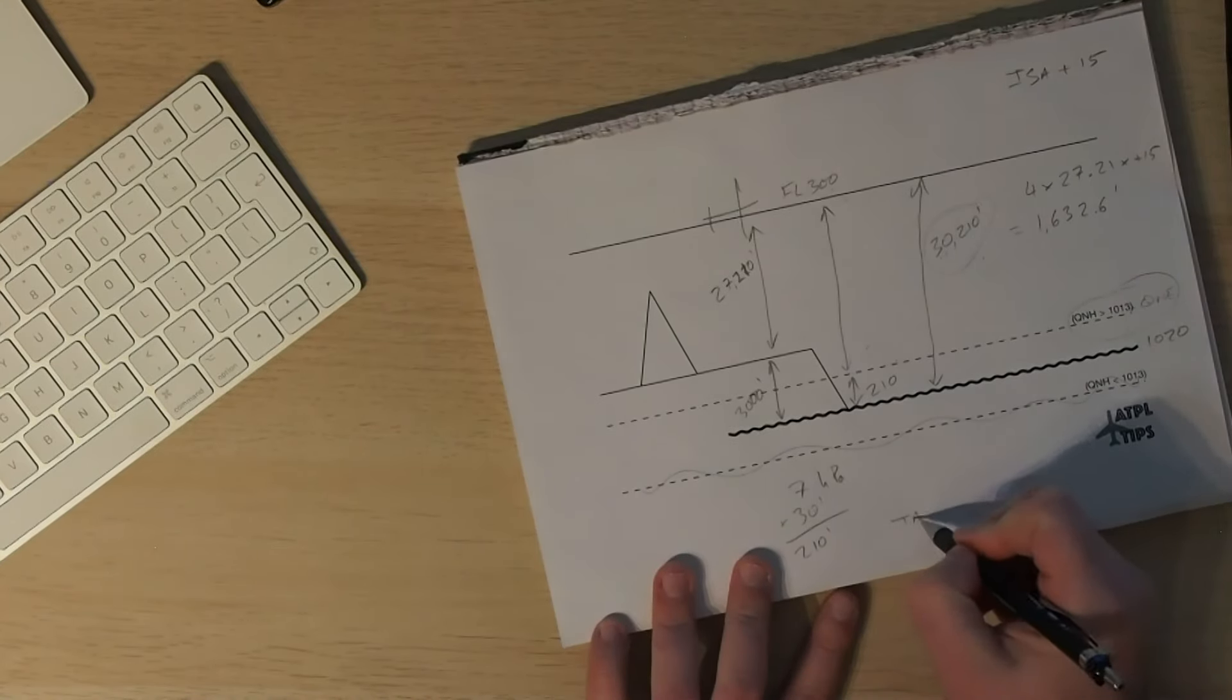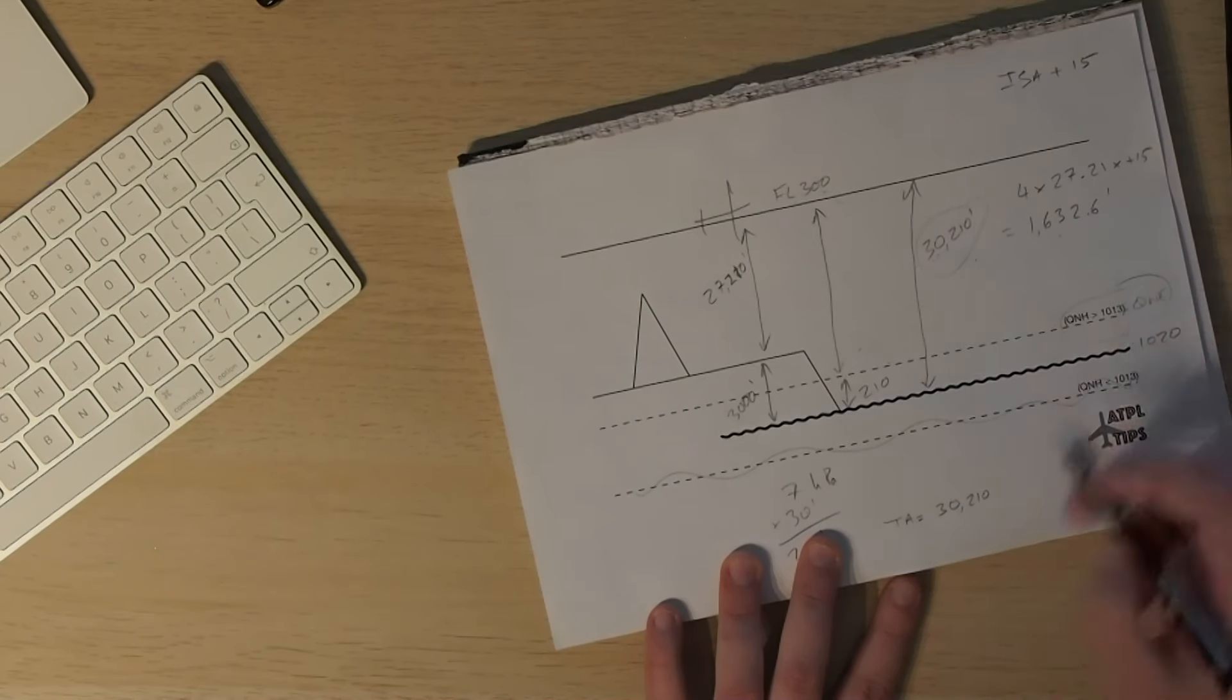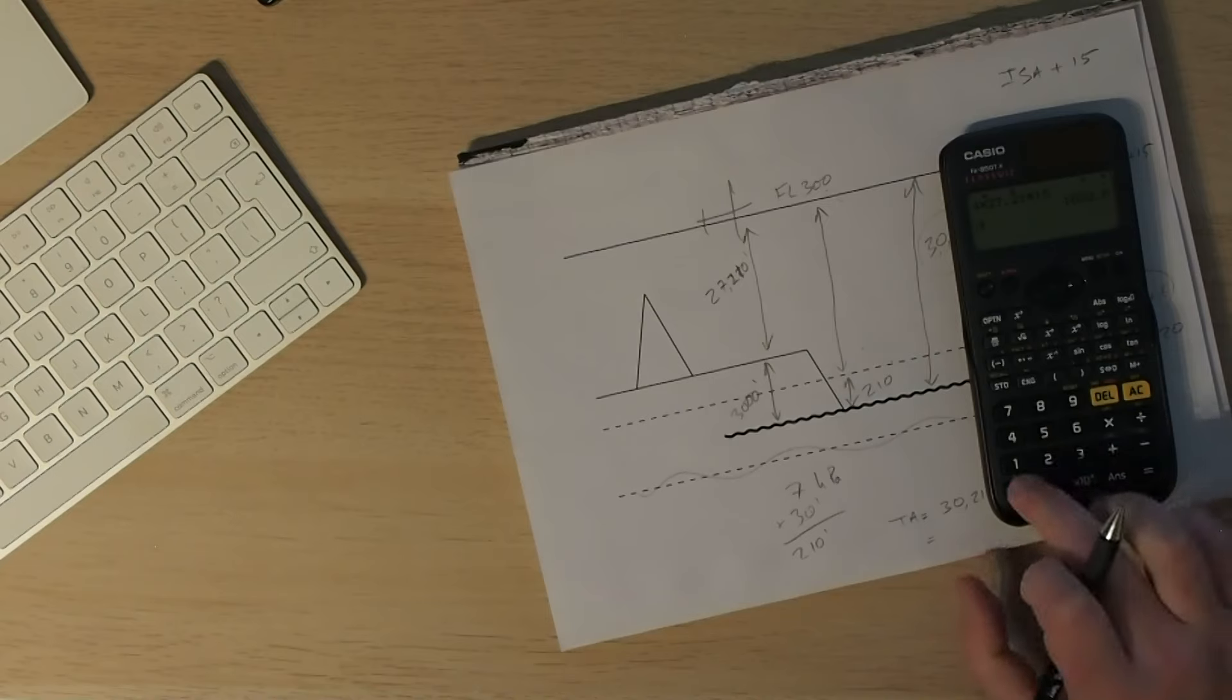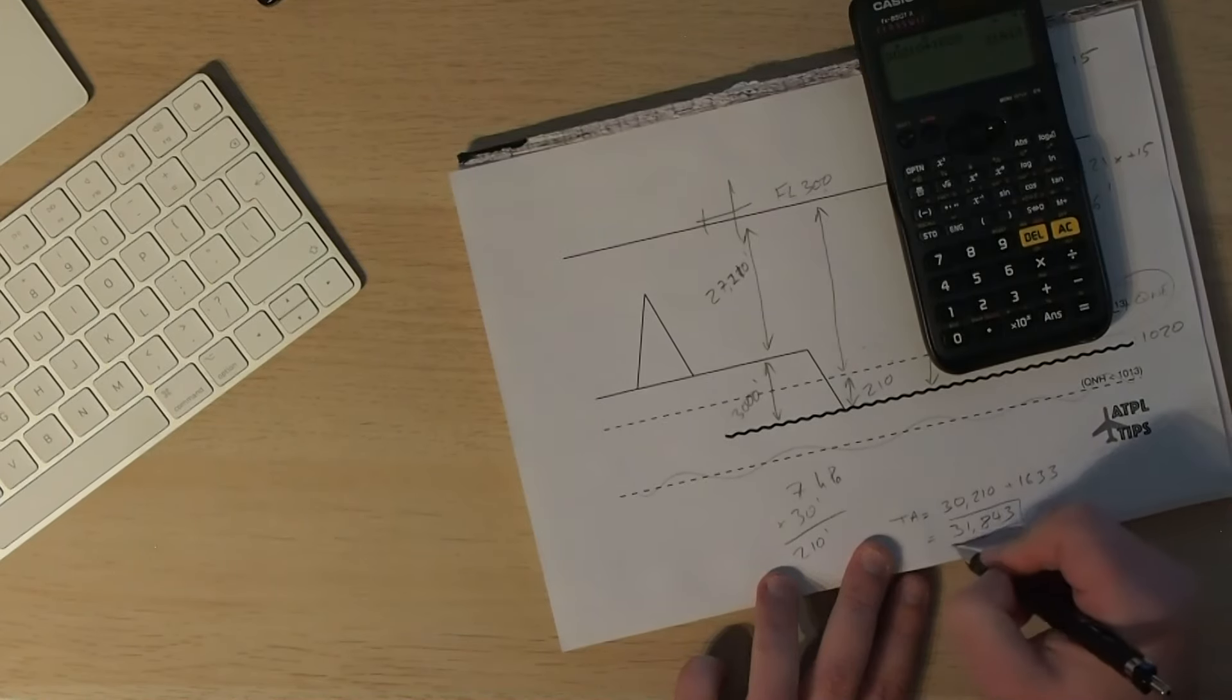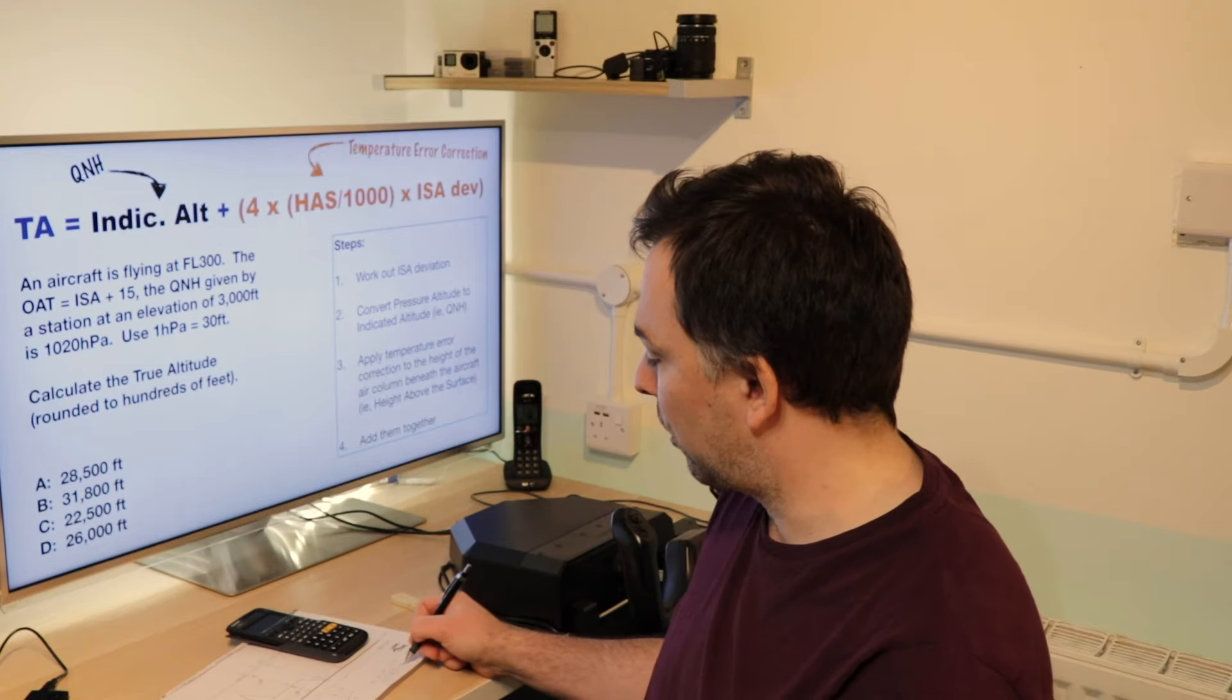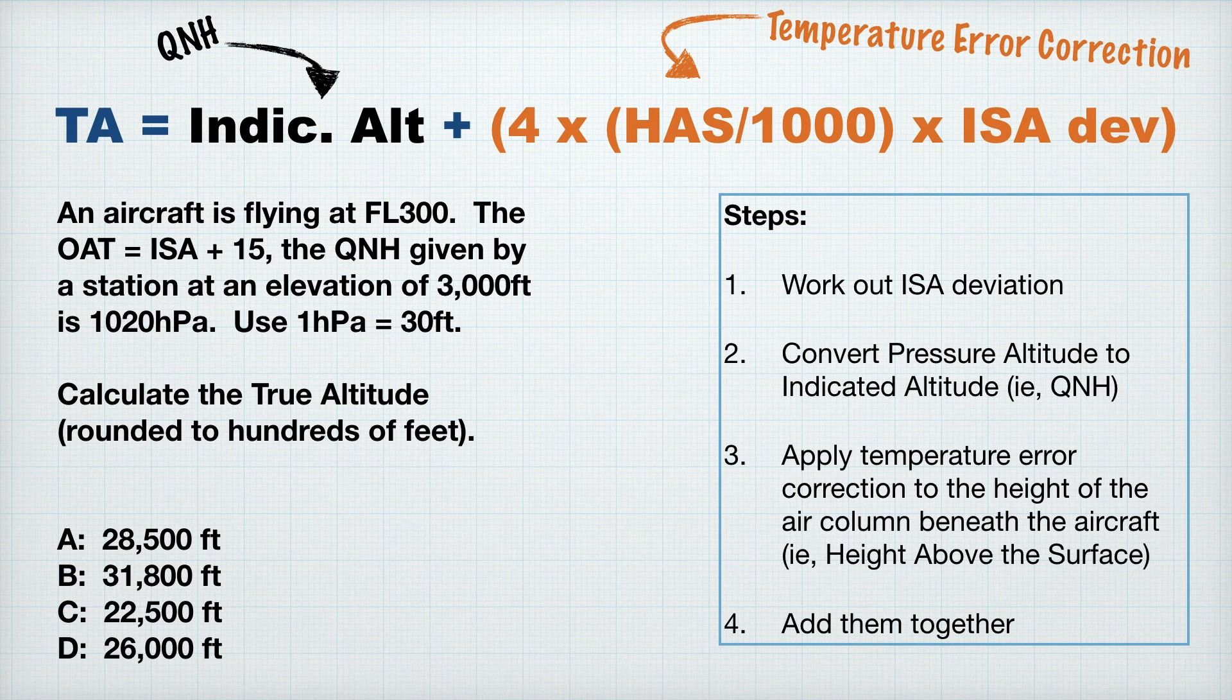So let's look at the true altitude formula. True altitude is indicated altitude plus temperature error correction. Well, our indicated altitude is 30,210. Our temperature error correction is 1633, I'm going to call that. We add them together, 31,843. And that is what I would say is our true altitude. Now let's look at the answers. We know that they've asked us to round to hundreds of feet. So we could round that down to 31,800. And would you believe it, one of the answers is 31,800. Excellent. The other options are quite far apart though.